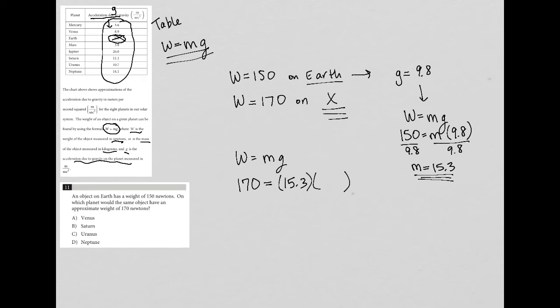So there's no real way to know it immediately. We can look at our answer choices here, and we just have to try each one. So Venus, for instance, let me just clean this up so we can see it clearly. Venus has a G value of 8.9. Now, 8.9 is less than 9.8. So I doubt this will work, because we want a value, we want a W value that's actually increased. But let's just try it just so you can see and be certain. So is it true that 8.9 times 15.3 is 170? And no, it's not true.